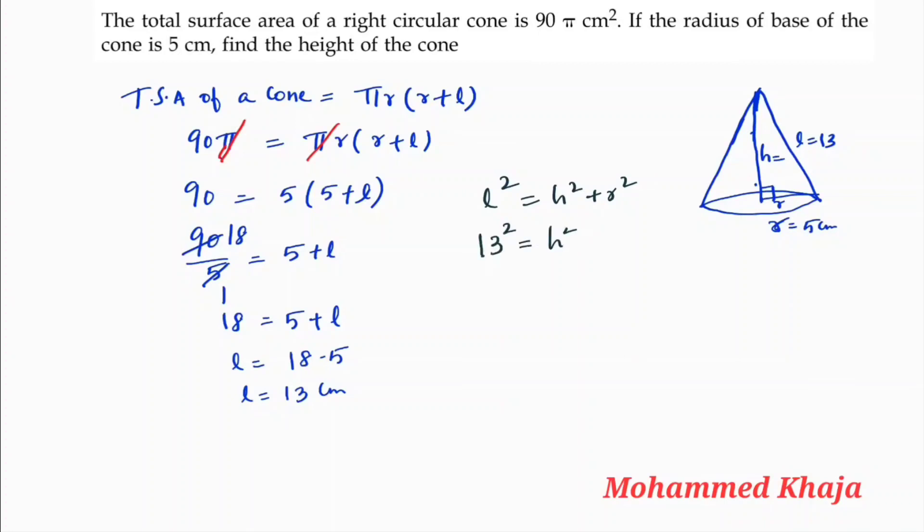So 13² = h² + r², where radius is 5. 13² = h² + 5², giving us 169 = h² + 25. So 169 - 25...